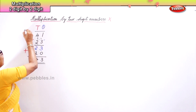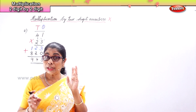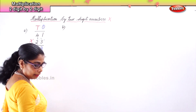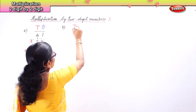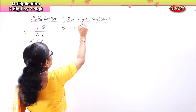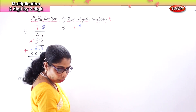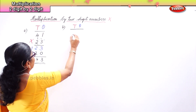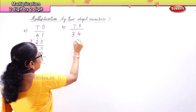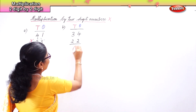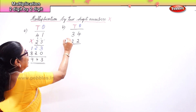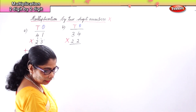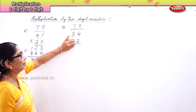Now we will do some more sums — two-digit by two-digit. First write tens and ones so that we do not go wrong. The next number is 34 multiplied by 22.